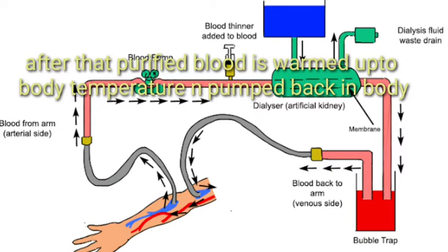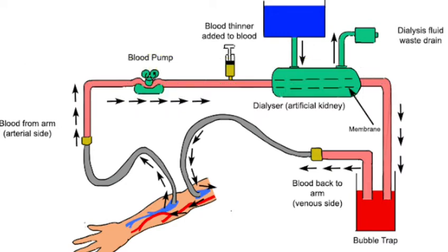Hemodialysis isliye kehte hain kyunki hemo means blood — ye blood ko purify karne ki, waste material ko remove karne ki process hai. Hemodialysis ke functions: first, it helps to purify our blood to remove nitrogenous waste. Second, it controls the blood pressure. Third and last, it maintains the sodium and potassium pump, which is very important for a better life.